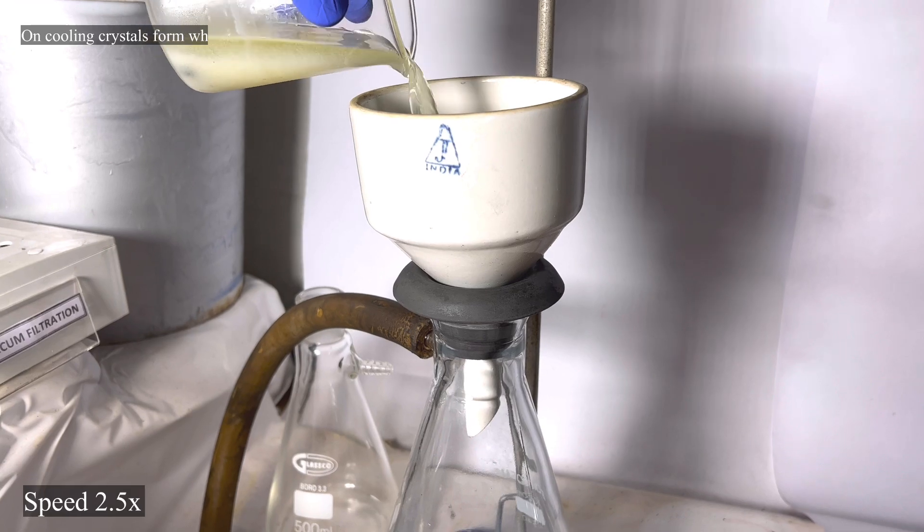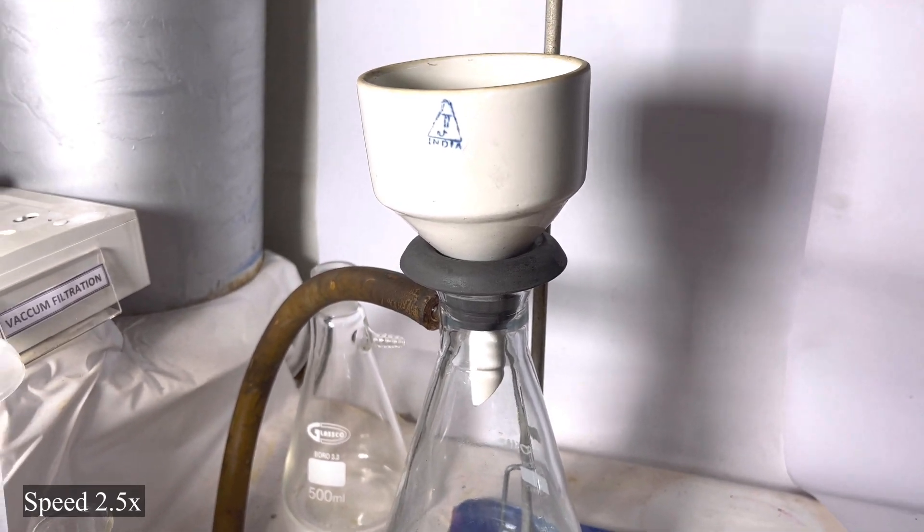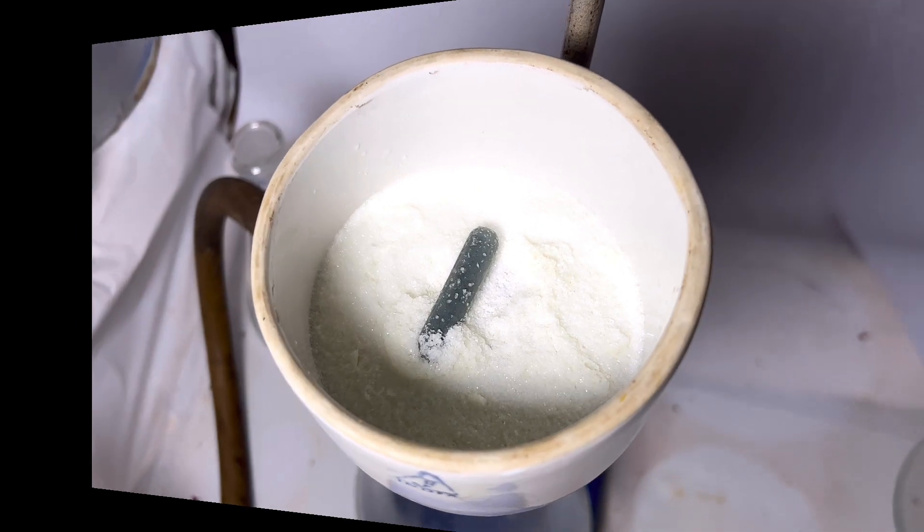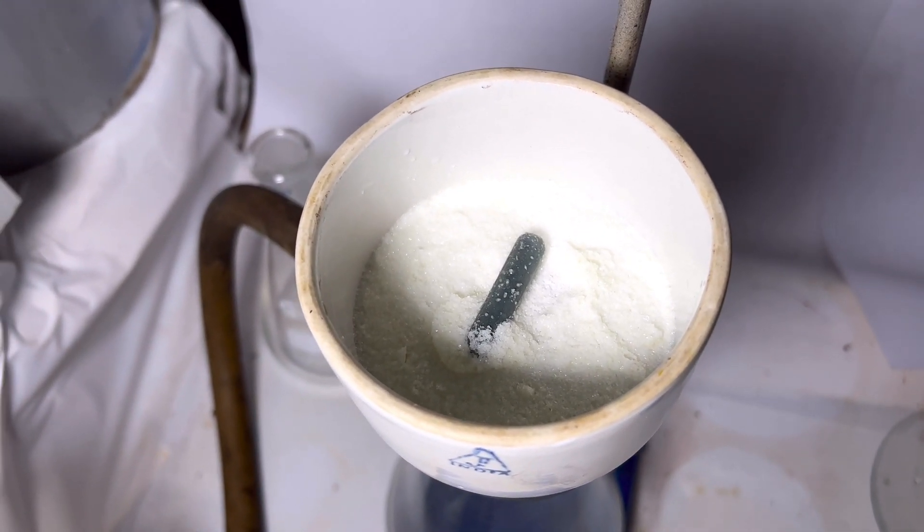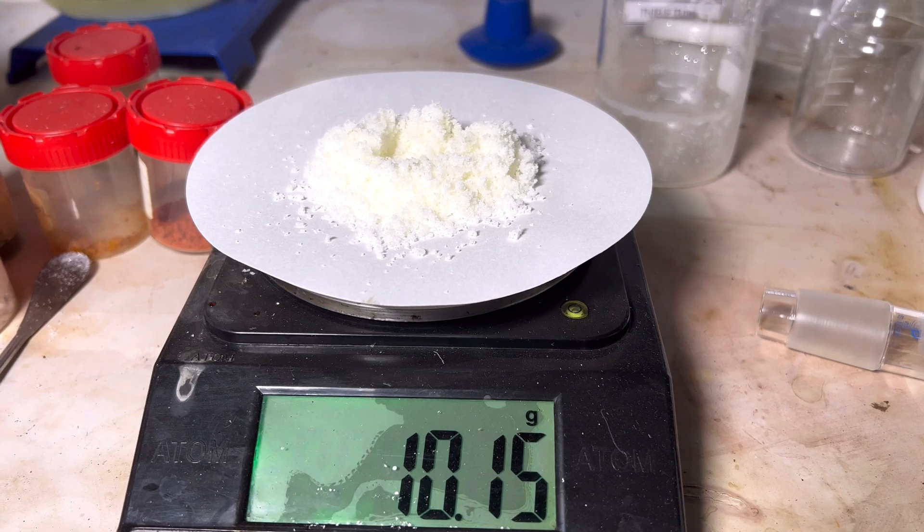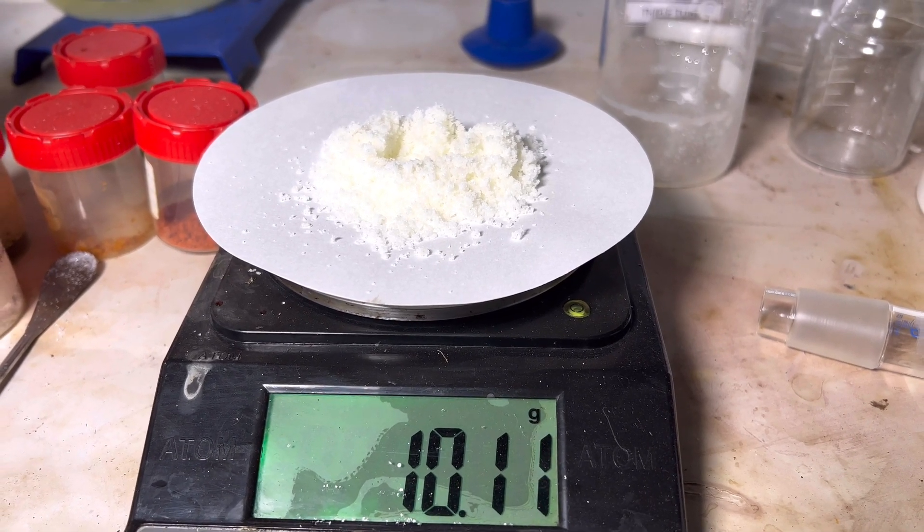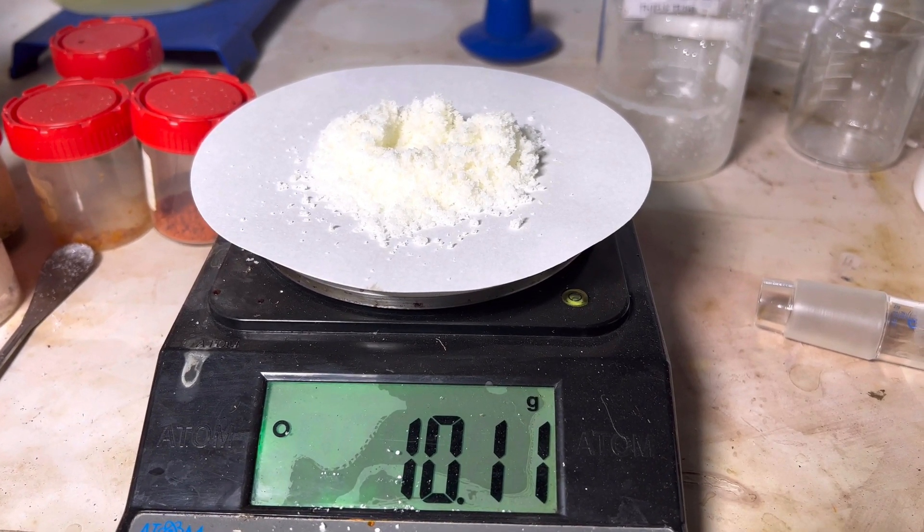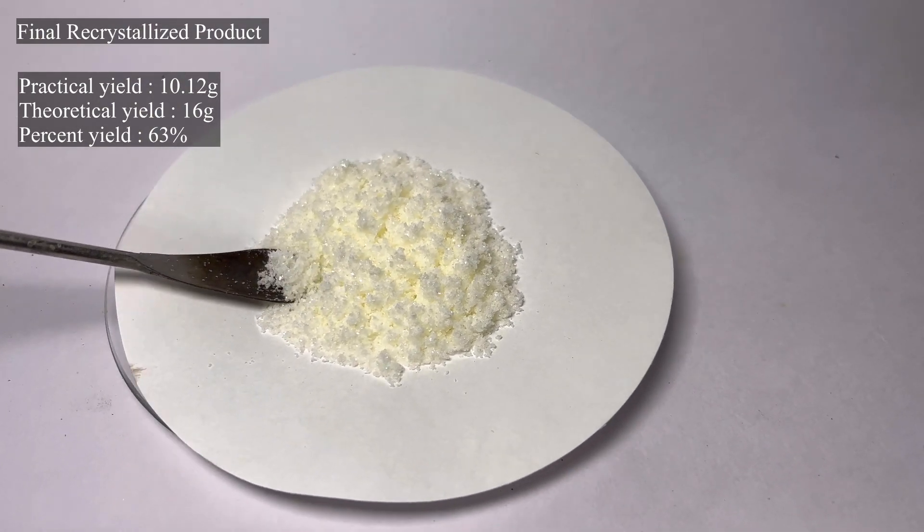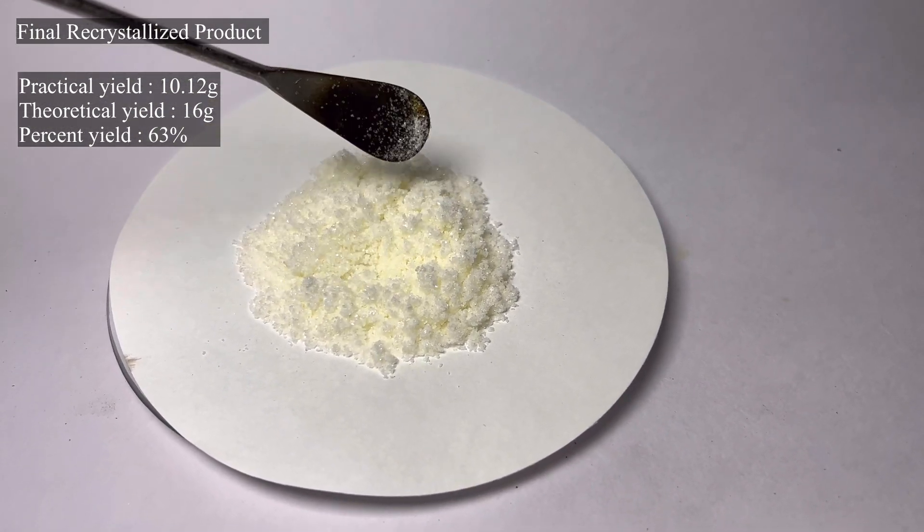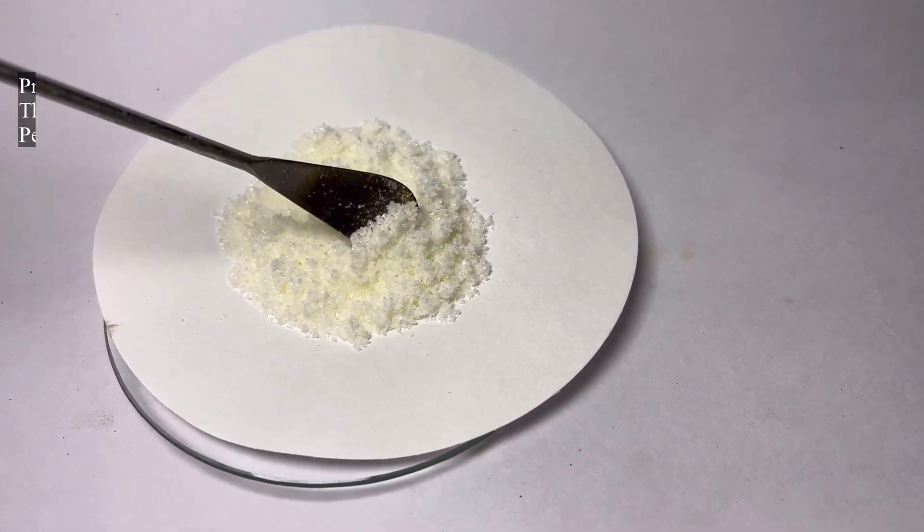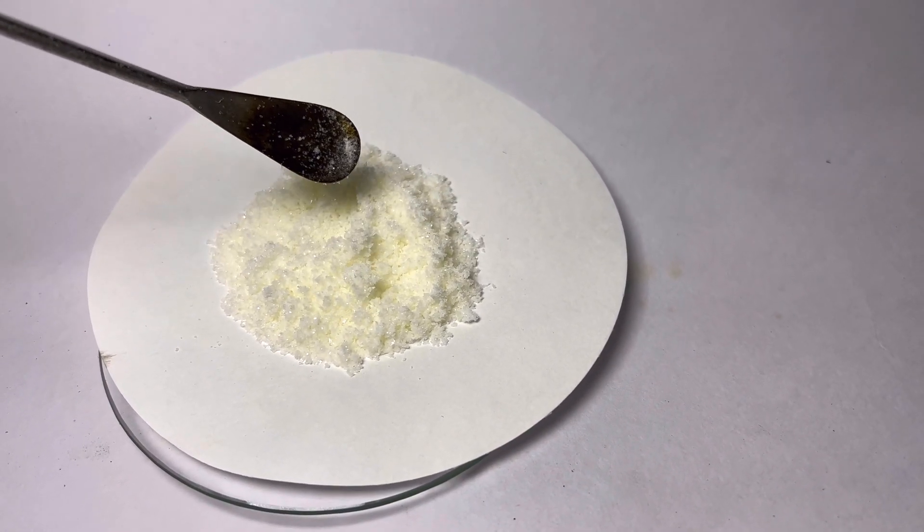The product was then vacuum filtered and dried. The dried product weighed 10.1 grams. The theoretical yield was 15.6 grams so the percentage yield was 64%. The melting point was confirmed using a capillary tube and it was around 160 to 163 degrees Celsius which is roughly the melting point of triphenyl methanol.